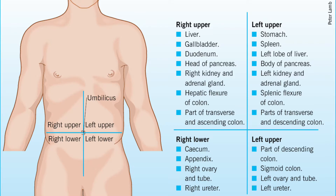The right lower quadrant contains the appendix, ascending colon, cecum, gonads, right ureter, and half of the bladder.